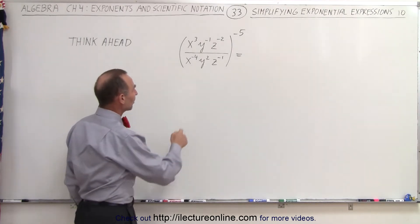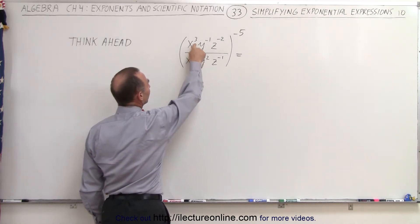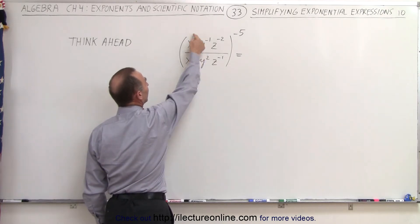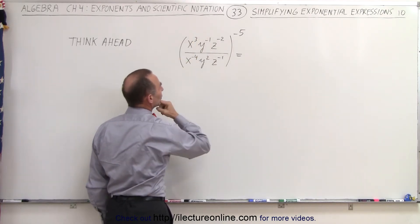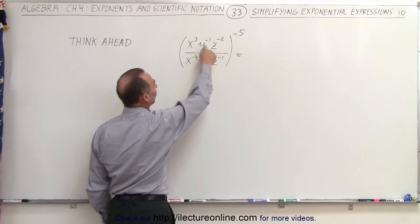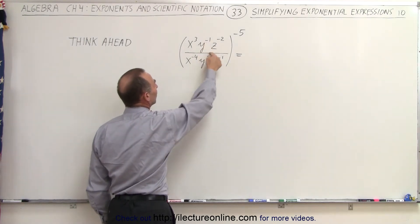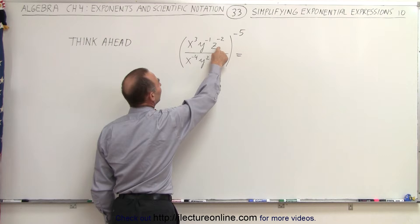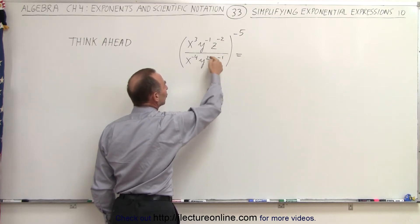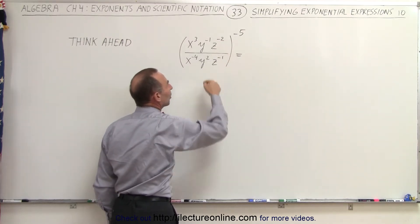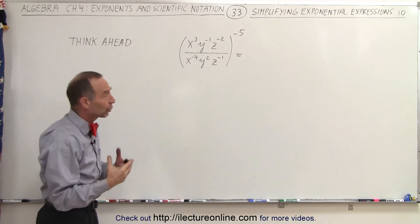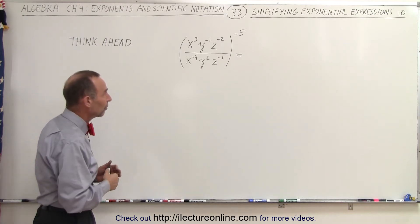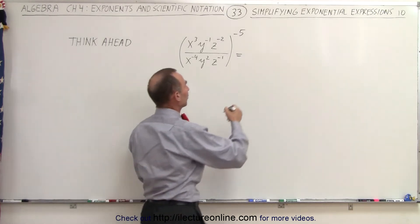Realize that here we have a negative 4 and a positive 3, so when I bring the x to the negative 4 up, I end up with x to a positive exponent. If I bring the y to the negative 1 down, I end up with a y to a positive exponent, and if I bring z to the negative 2 down, I also end up with z to a positive exponent. So we can very quickly decide which ones to move up and down to make things a lot simpler for us.